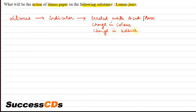Litmus is an indicator that when we treat with acid or base changes in color accordingly. Right?